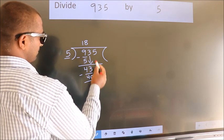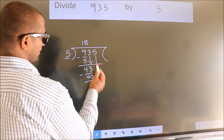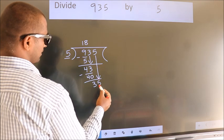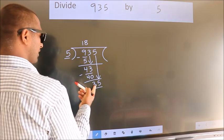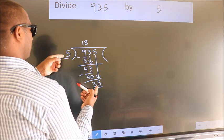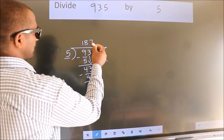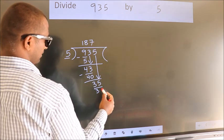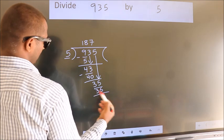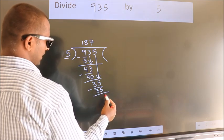After this, bring down the beside number. So 5 down. So 35. When do we get 35? In the 5 table, 5 sevens, 35. Now we subtract. We get 0.